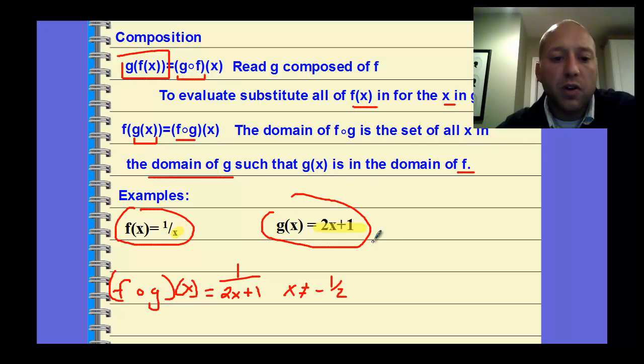Let's do another problem with the same functions, but instead let's do g composed of f of x. We take the function f, so we're going to go the other way now. We're going to take this entire function and put it in for the x in the other equation. So we're going to write 2 times the quantity 1/x, plus 1.